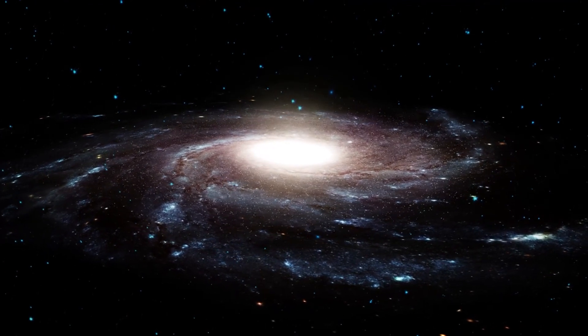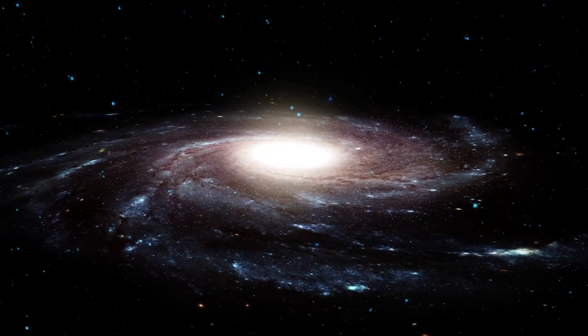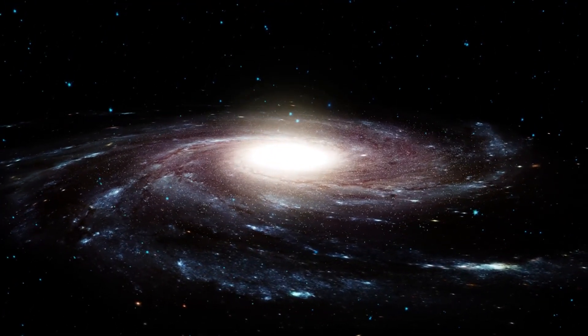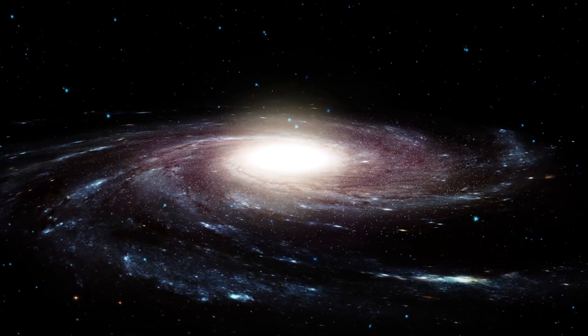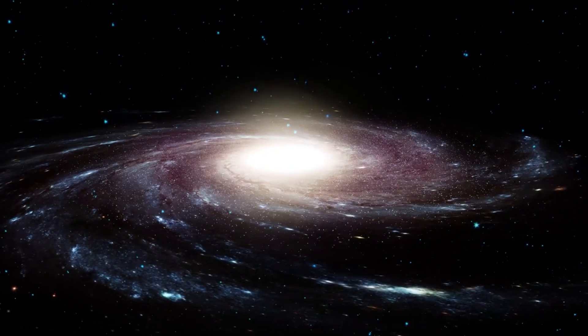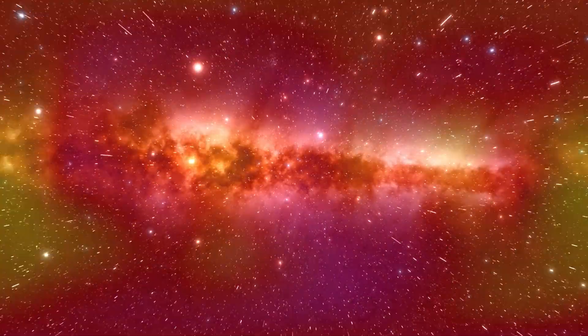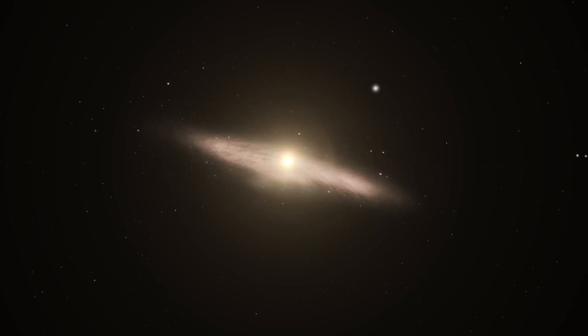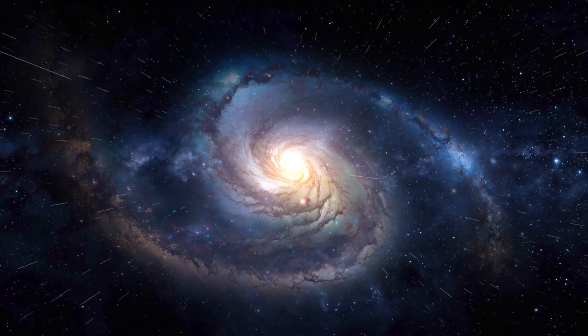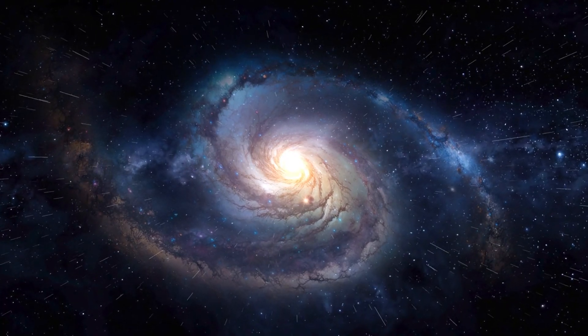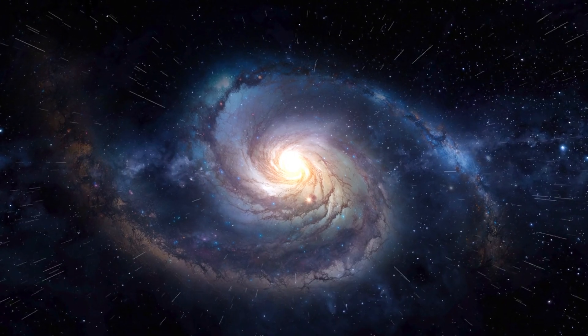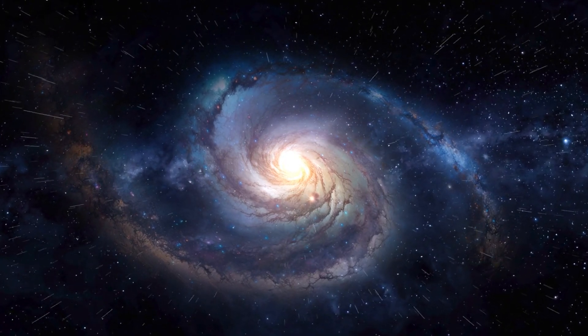If our Milky Way galaxy were placed at the center of the Boötes void, we wouldn't have even realized there were any other galaxies in the universe until the 1960s. We would have believed we were alone in a black, empty universe. We wouldn't have seen any neighboring galaxies, no cosmic backdrop beyond the stars that fill our sky, just darkness. This level of isolation would stretch on for millions of light-years in every direction, creating a deep sense of cosmic isolation.